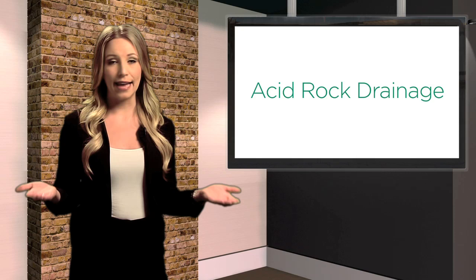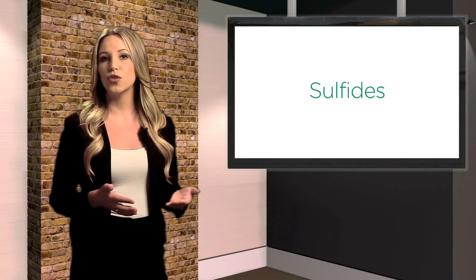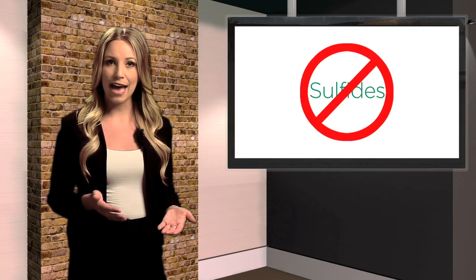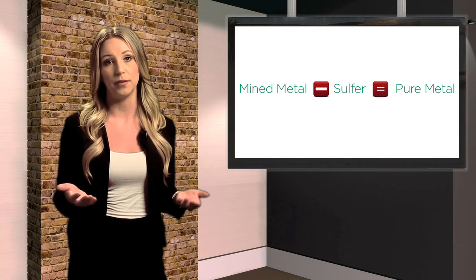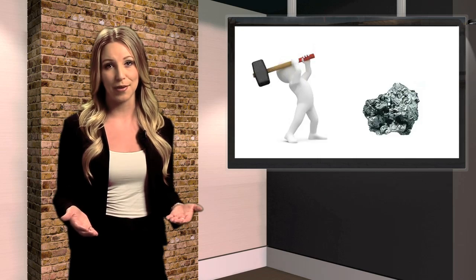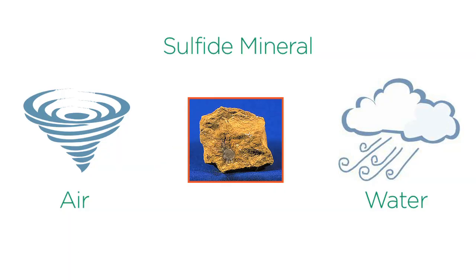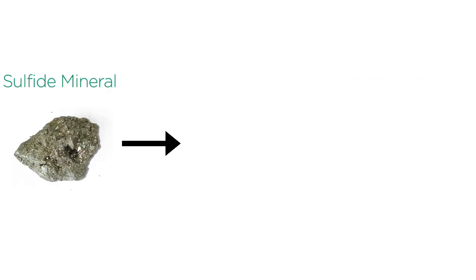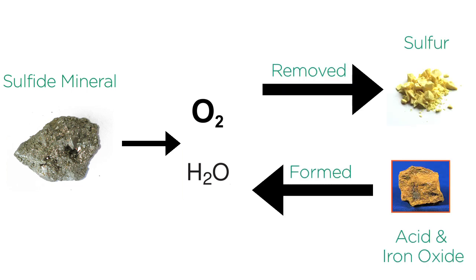So now let's talk about acid rock drainage. Metals rarely occur in their pure state but are often formed in nature combined with sulfurous minerals called sulfides. Metals are not usable as sulfides, and after mining the sulfide minerals, sulfur needs to separate and be removed to produce a pure metal. When sulfide minerals are exposed to air and water, they corrode. Take for example the iron sulfide pyrite, which is the most common sulfide mineral. When exposed to atmospheric oxygen and water, sulfur is removed as acid and iron oxide — a rusty material — is formed.